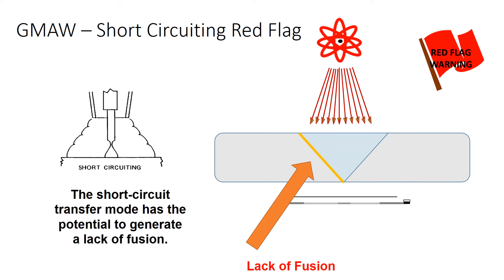Our big fear with this mode of transfer is that we're going to get lack of fusion — it's not going to tie into the base metal. Until you've seen this happen, it's hard to imagine, but it does occur. You'll see it with people welding farm equipment or making a repair with a small MIG welder in the garage — they put in a beautiful weld and it breaks. There's not enough heat to really burn into the base material. Gas metal arc welding short-circuiting: the big red flag is lack of fusion and failure to tie into the base metal.